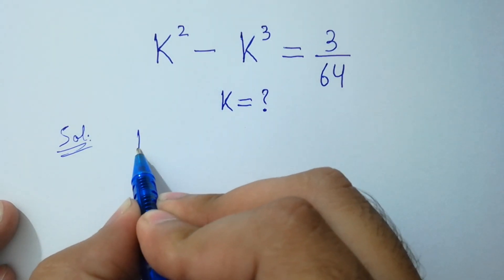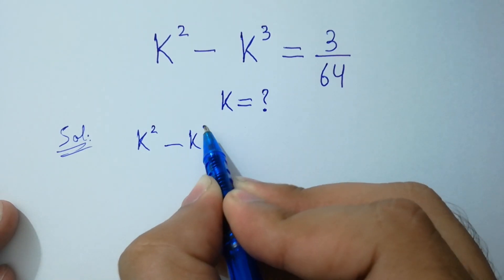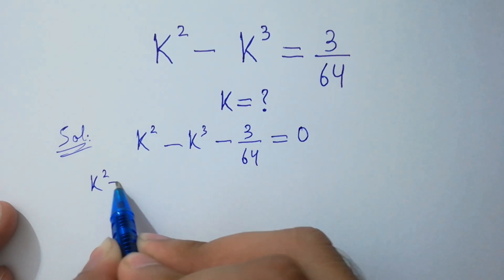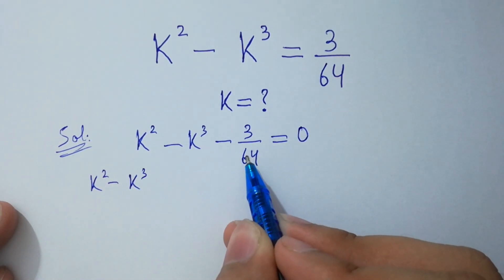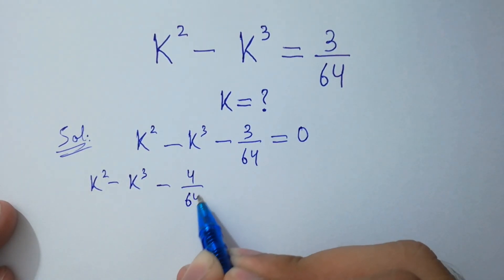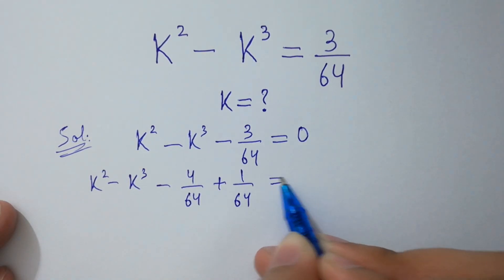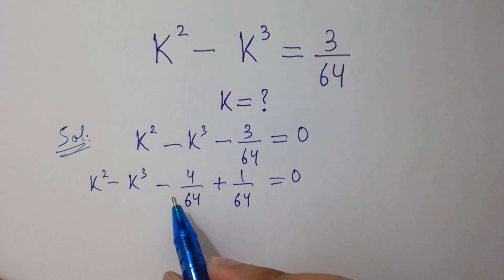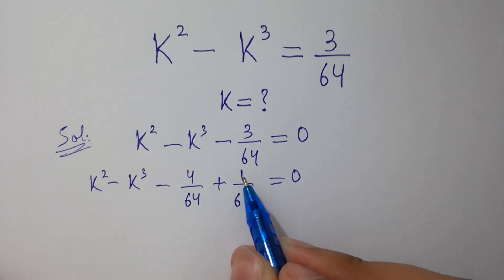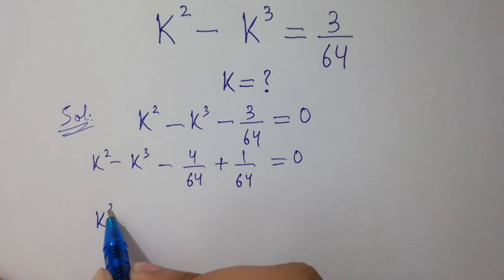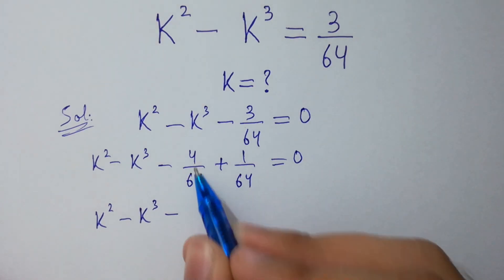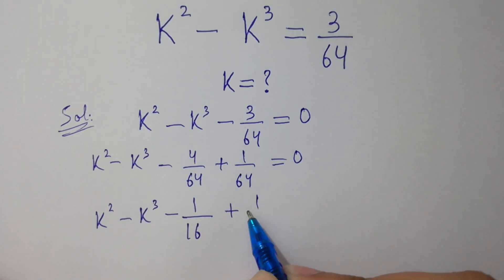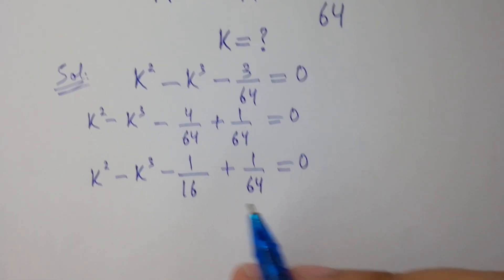It will be equal to k squared minus k cubed minus 3 over 64 equal to 0. I can consider minus 3 over 64 as minus 4 over 64 plus 1 over 64, which equals 0, because 1 over 64 common: minus 4 plus 1 equals minus 3. So k squared minus k cubed minus 4 times 1 over 4 times 16 plus 1 over 64 equals 0.